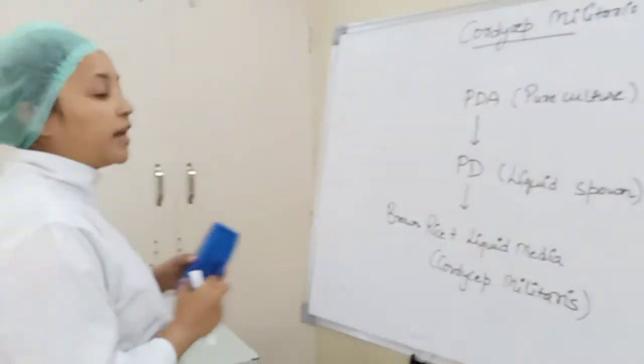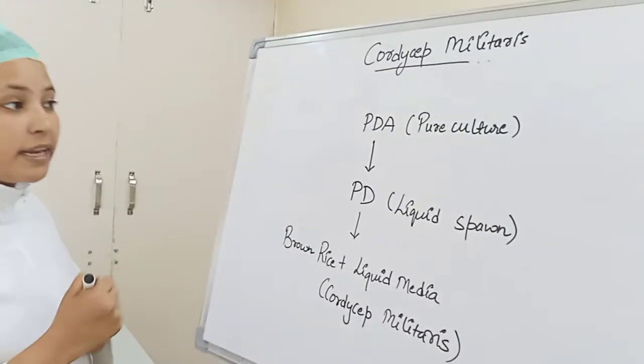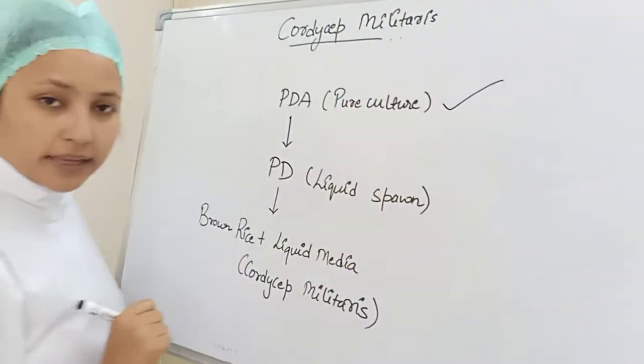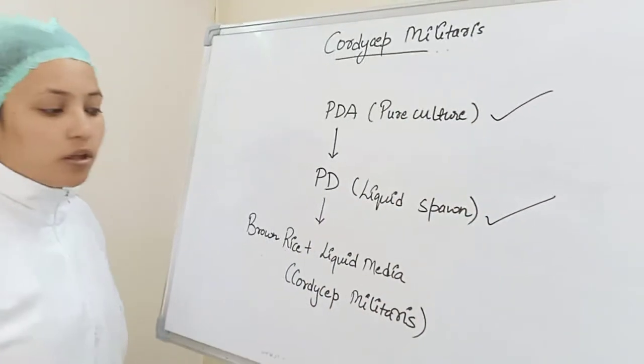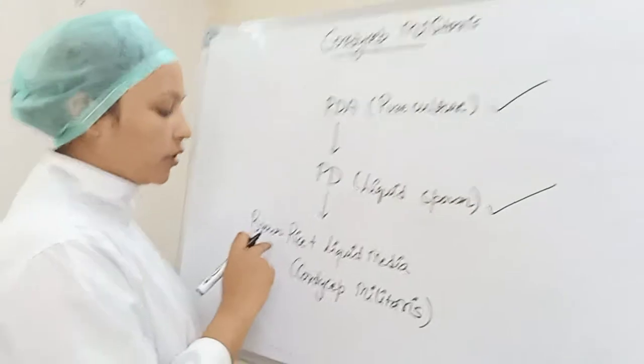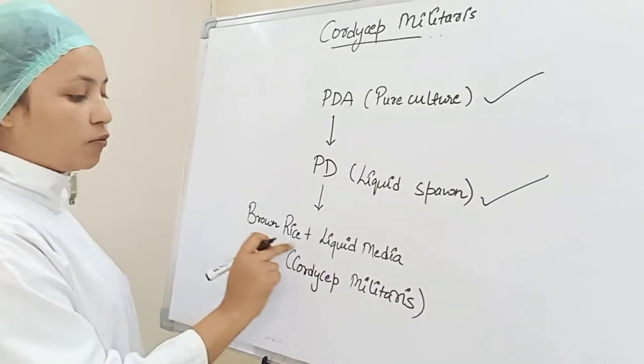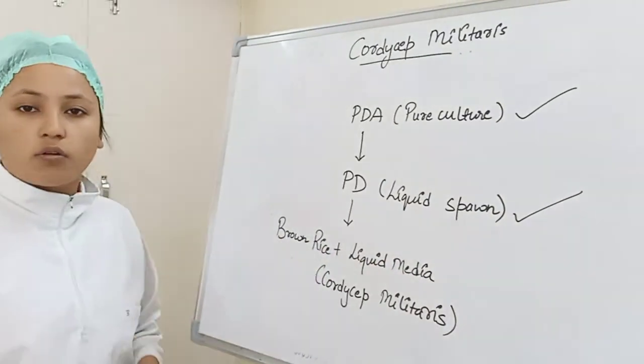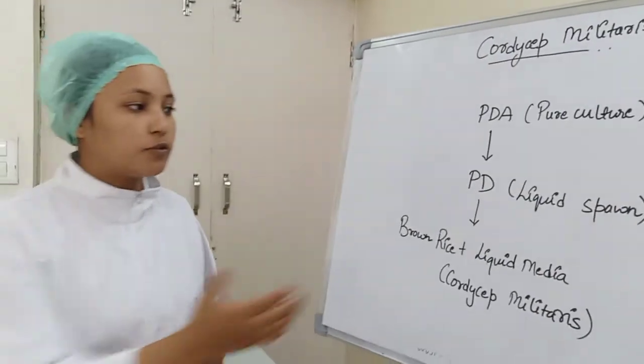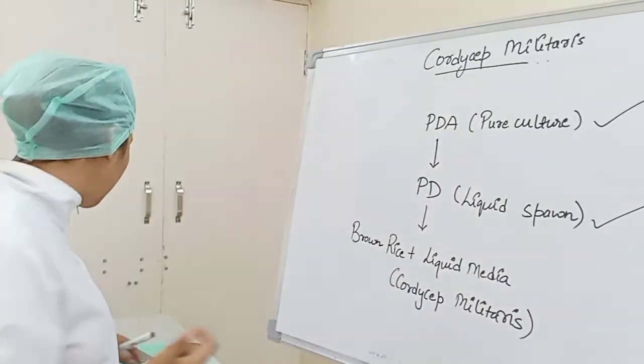The first step that we will do today, we will do PDA and PD. After that, we will do Cordyceps militaris brown rice and liquid media sterilize first. Then we will add liquid spawn, and that process will be done tomorrow.